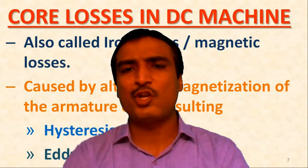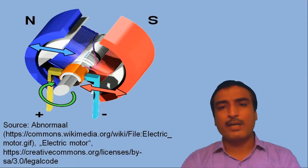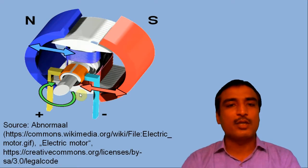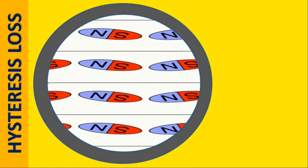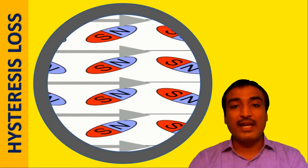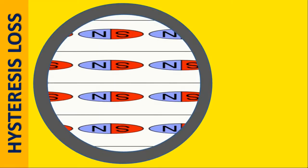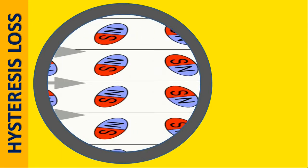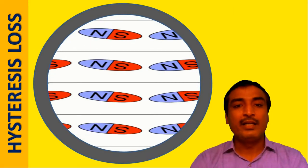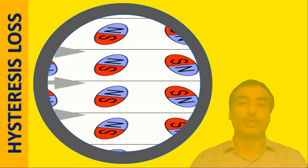The first question is how does hysteresis loss occur in the armature core of a DC machine? In reality, when any particular segment of the armature core passes under successive north and south poles due to the rotation of the armature, the magnetic domains in that segment of the armature core material are subjected to magnetic field reversals. As we know, the domains in any magnetic material have a tendency to align themselves in the direction of the magnetic field. For that reason, with the rotation of the armature in the magnetic field, the magnetic domains in the armature core material start rotating to and fro. Consequently, some power is wasted on account of the to-and-fro rotation of the magnetic domains in the armature core.